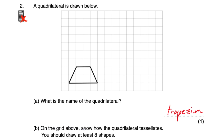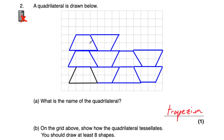Part B says on the grid above, show how the quadrilateral tessellates - you should draw at least eight shapes. So we've got to draw eight more trapezia to show how this trapezium will tessellate. And there we go - I've drawn nine more trapezia on the grid, so in total we've got ten. That includes the one drawn for us, so we've got ten trapezia on the grid. As you can see, they fit together perfectly with no gaps, and I could just carry on that pattern. So I've shown how the trapezium tessellates.